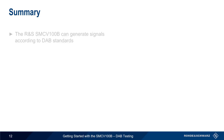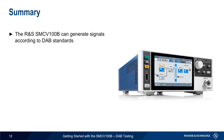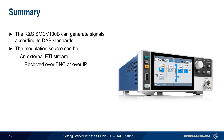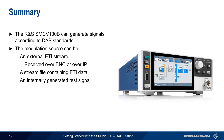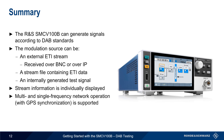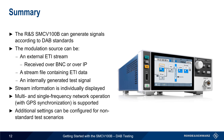In summary, the Rohde & Schwarz SMCV100B vector signal generator can be used to generate signals according to the Digital Audio Broadcasting or DAB standards. Three different modulation sources can be used: an external ETI stream fed in over a BNC connector or via IP over the LAN interface; a stream file containing ETI data using predefined stream file libraries; or an internally generated ETI test signal. Once a source is configured, information about each stream is displayed in real time. The SMCV supports both multi-frequency and single-frequency network modes, with GPS synchronization for single-frequency networks, and allows configuration of additional settings for non-standard testing scenarios.